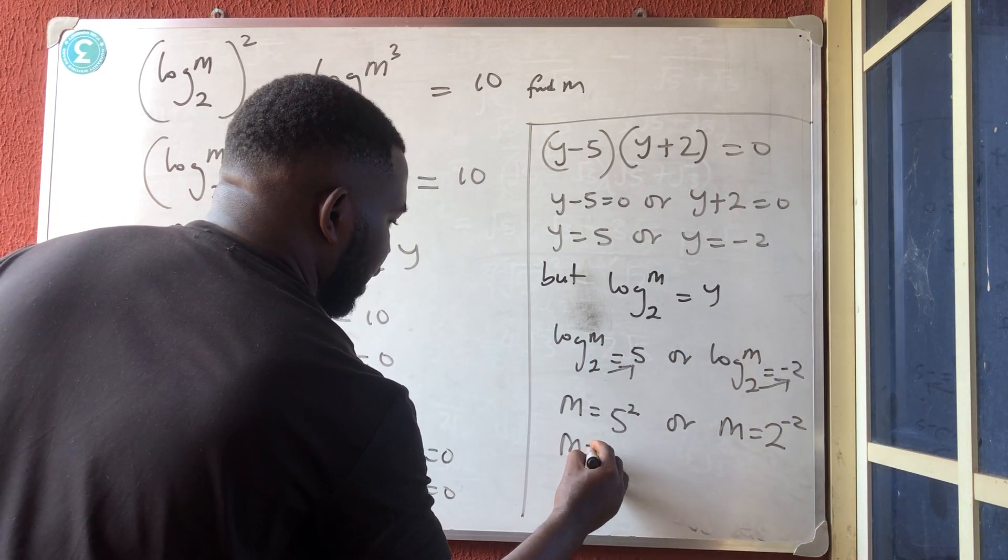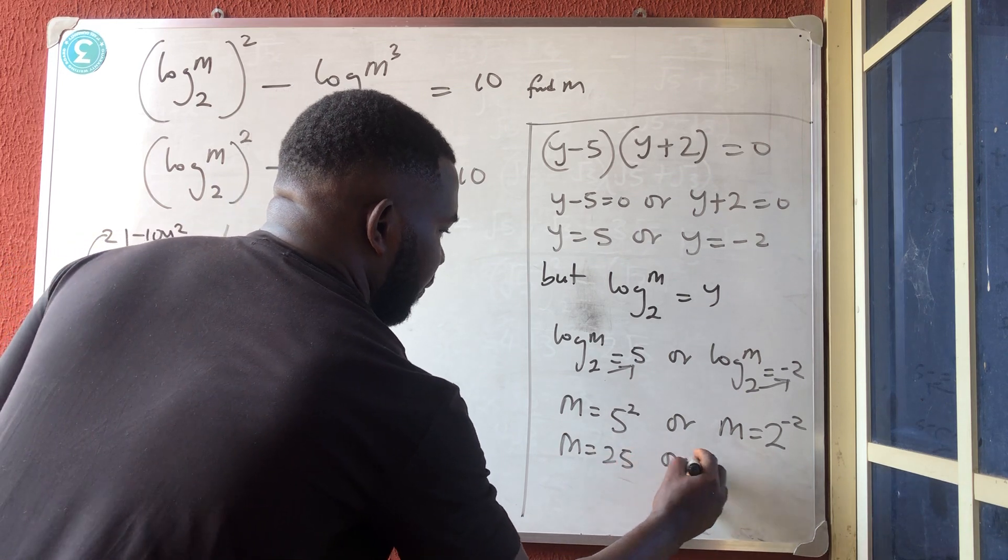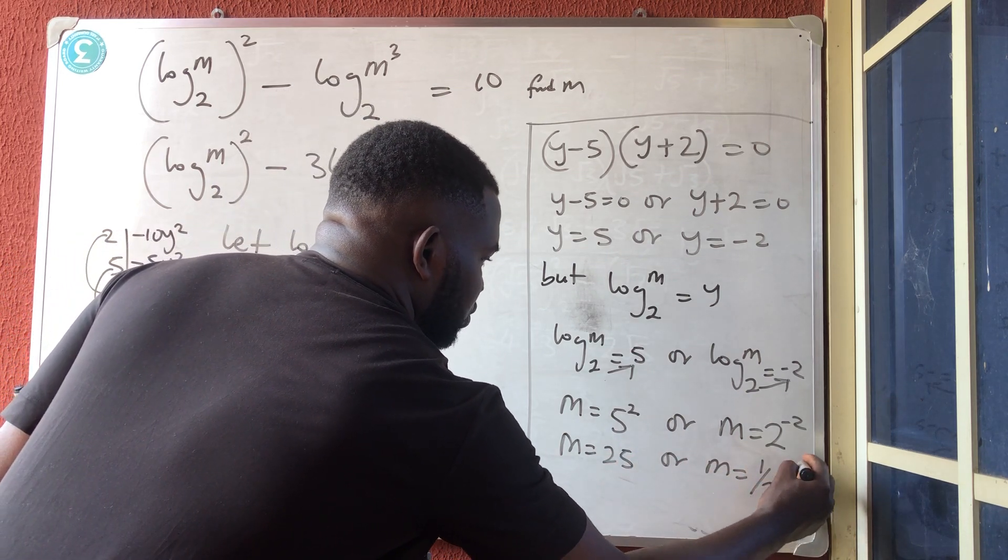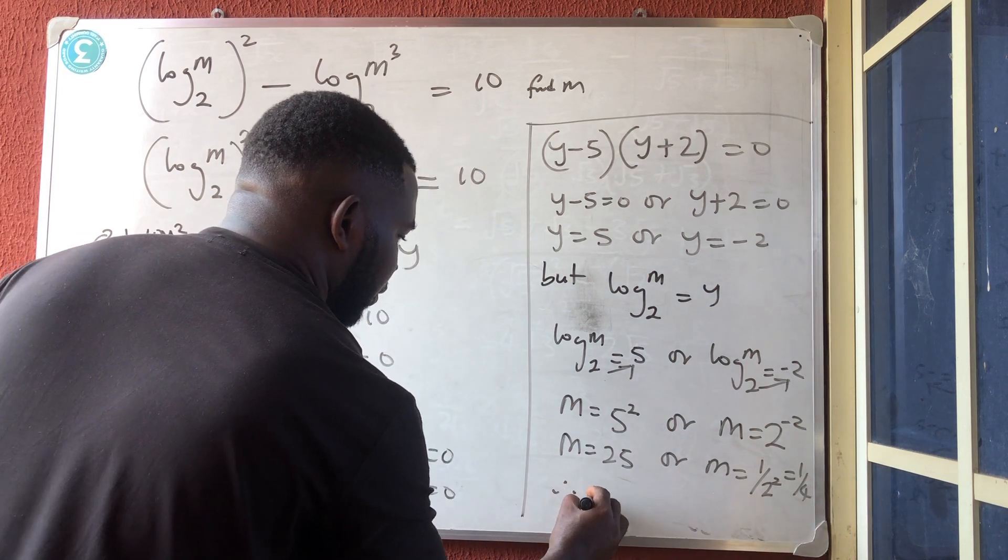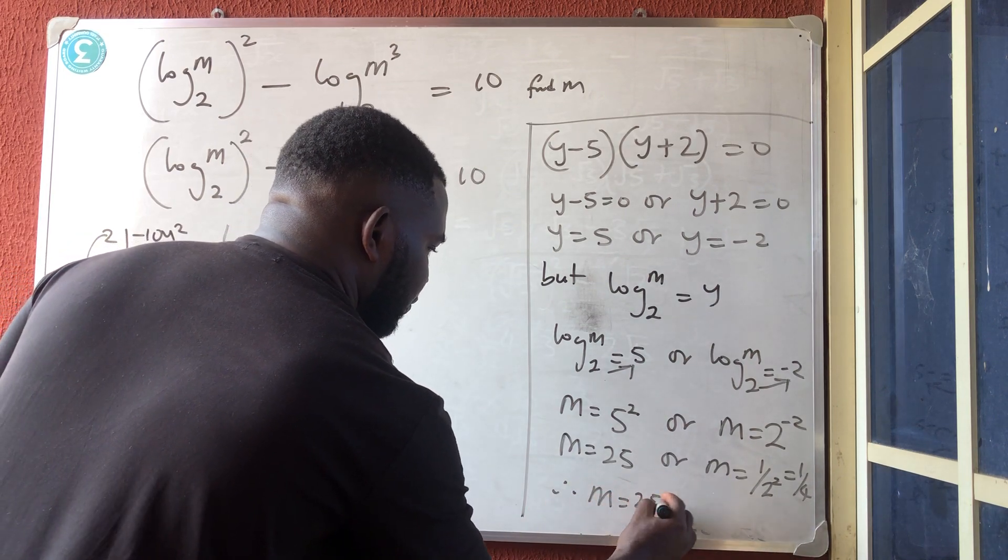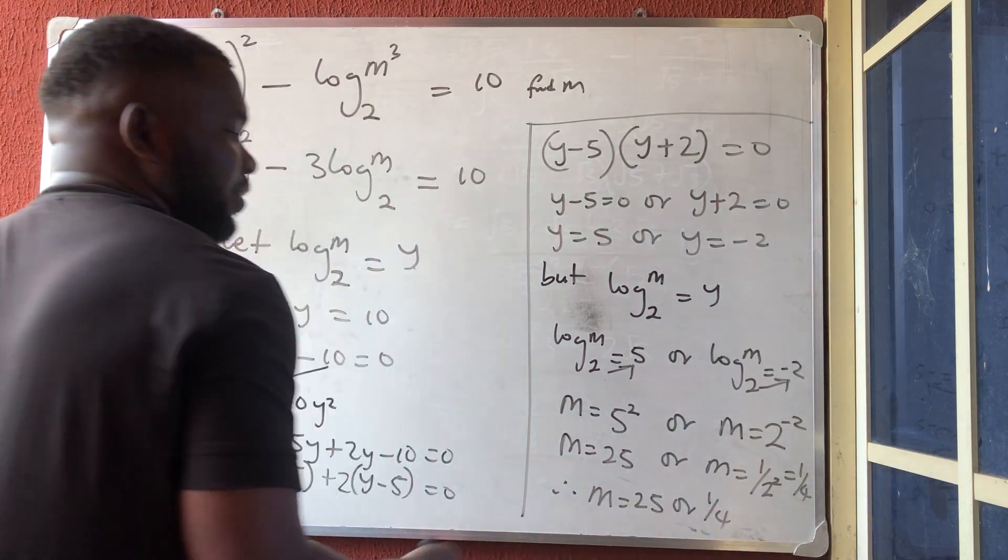So what do we have? m here is 25, or m is 1 over 2 raised to power 2, which is 1 over 4. So therefore, my m is 25 or 1 over 4. Thank you very much.